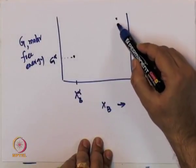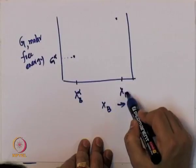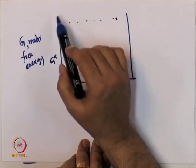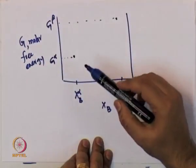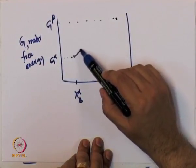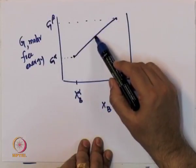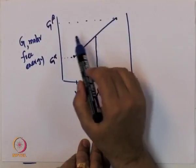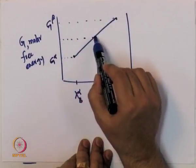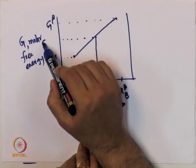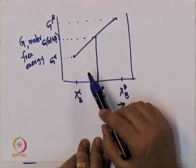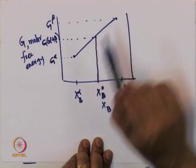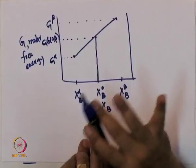Then I have x_B beta, corresponding to G beta. What we want to prove is that if you take a straight line connecting the two, for any composition x_B naught it gives the molar free energy for a mechanical mixture of alpha and beta. Different points on this line correspond to how much of alpha and how much of beta you take.